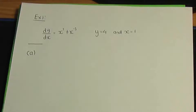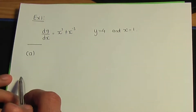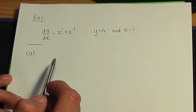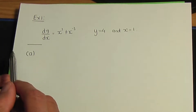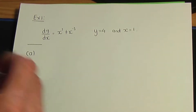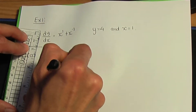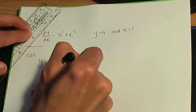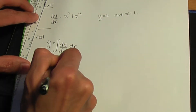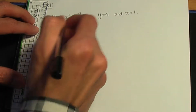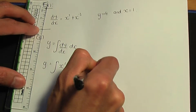Back to the paper and pen. We have dy over dx given by x cubed plus x to the minus 3. In part A we need to find y in terms of x. Remember, if you have dy over dx, to work out y you need to integrate. So we're integrating dy over dx, which is x cubed plus x to the minus 3, with respect to x.